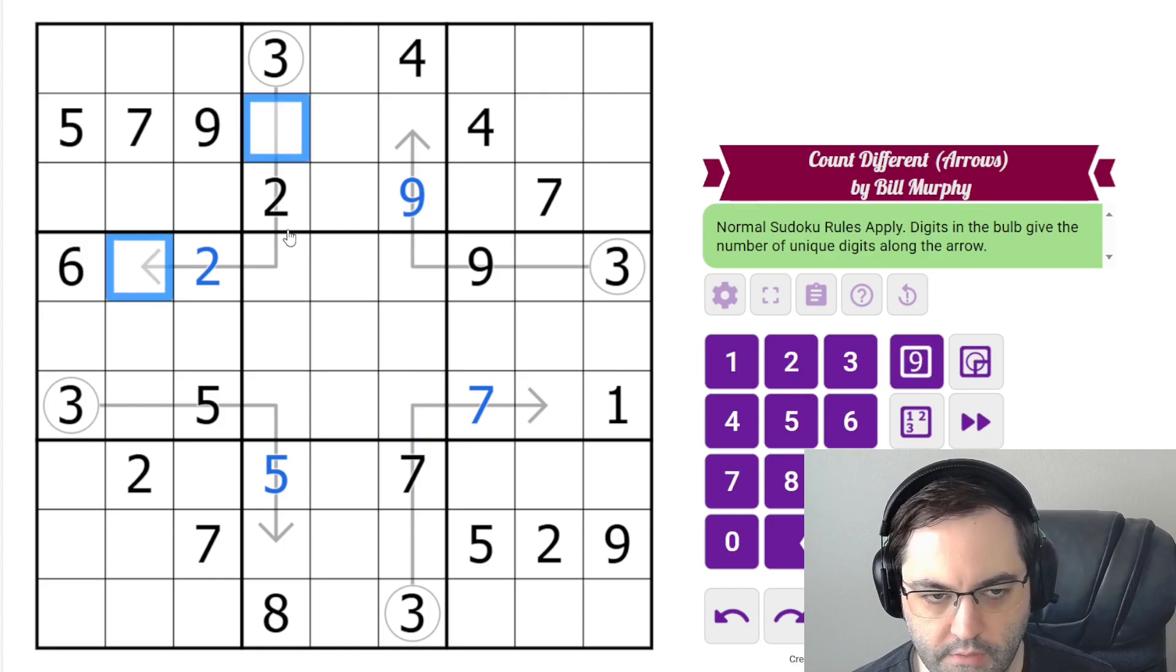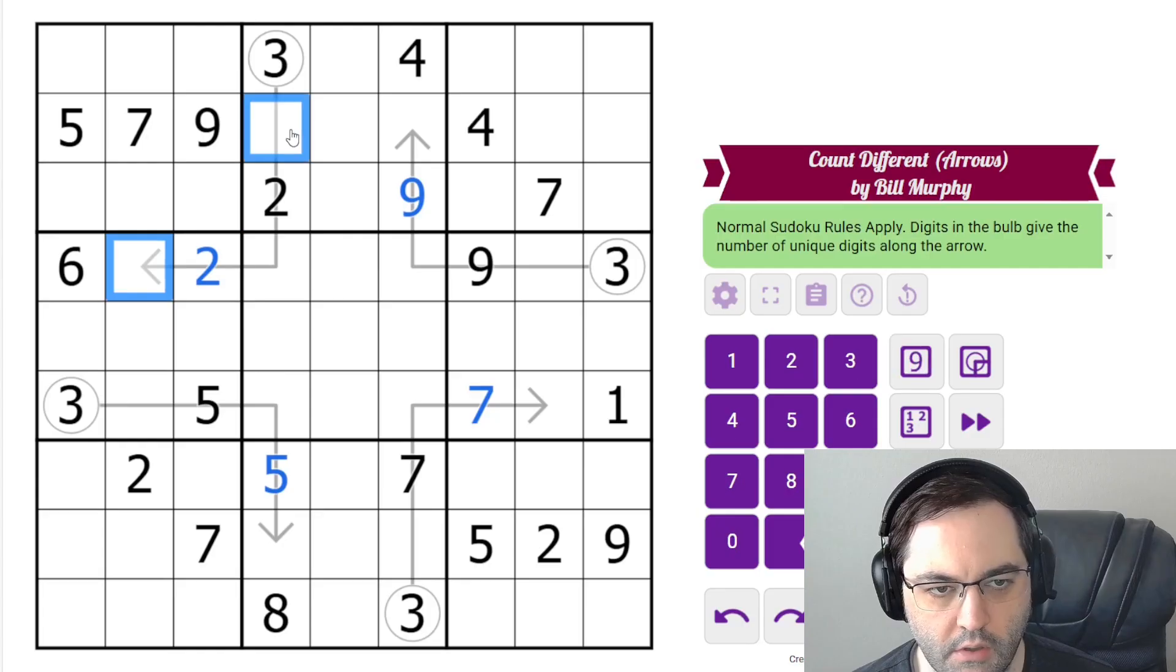Now, these two digits are going to have to be the same because the third digit is going to be in this cell shared by both. So if these are the same, what can they be?